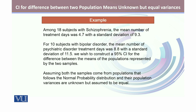We wish to construct a 95% confidence interval estimate for the difference between the means of the populations represented by the two samples. We assume that both samples come from a population that follows a normal probability distribution and that their population variances are unknown but assumed to be equal.